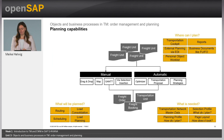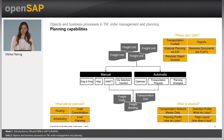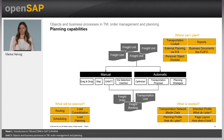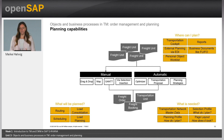How do we do the planning? This is the most powerful area of TM. We have a lot of different capabilities here. In TM you have the possibility to plan manually. We have a map, we have a Gantt chart. Maybe you have your own fleet and you want to plan on a Gantt chart. We have the opportunity to use drag-and-drop, we can use via insertion and selection — do all the manual planning there. But we also have an optimizer in place. You can use this optimizer engine to optimize your routing, your scheduling, your load consolidation, and also your load planning — so you can decide where to put the packages into the truck.